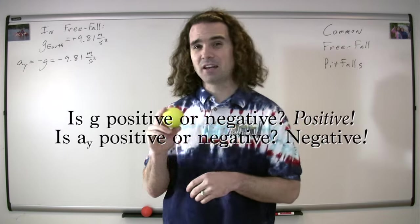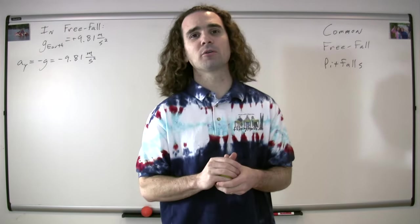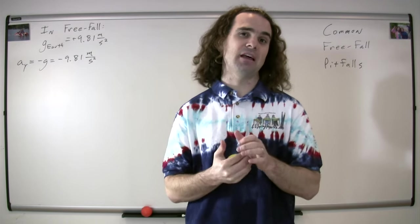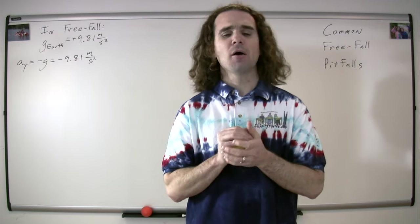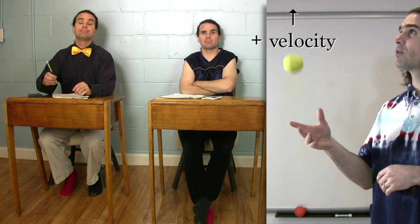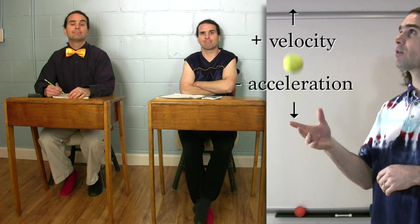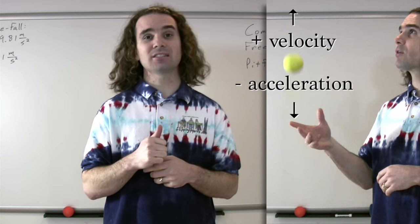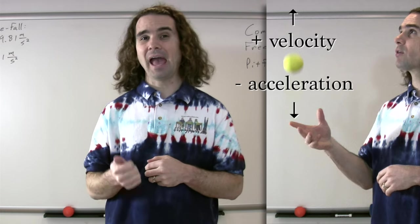The first misconception is that if I throw this ball upward, then when it is moving upward, because the velocity is positive, the acceleration would also be positive, and therefore it would be positive 9.81 meters per second squared. Bobby, please explain why this is incorrect. Well, we know the ball will slow down as it moves upward, therefore the direction of the acceleration needs to be opposite the direction of the velocity. Therefore, because the velocity is upward and positive, the acceleration must be downward and negative. Exactly, Bobby. So the ball slows down on the way up, so the acceleration is opposite the direction of the velocity — therefore the acceleration is down and negative.